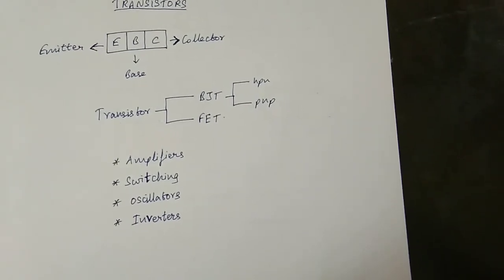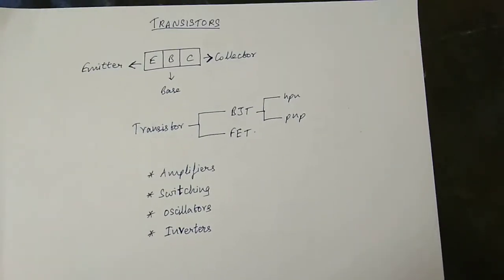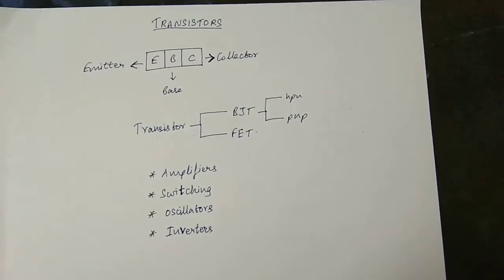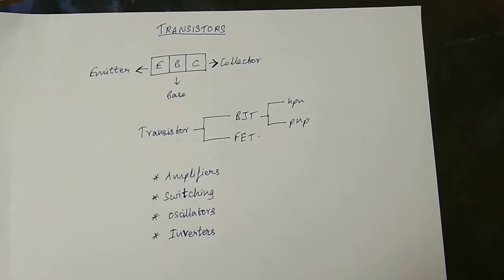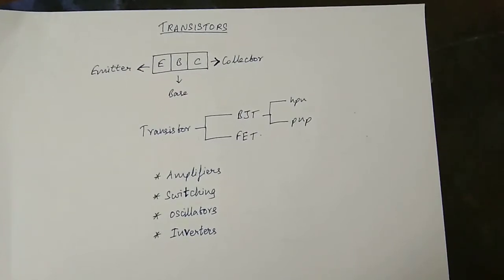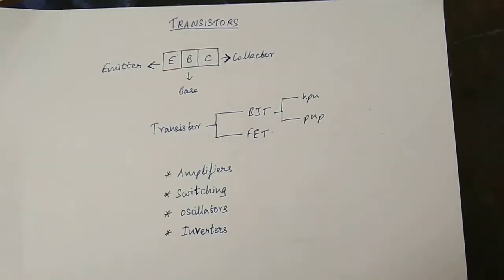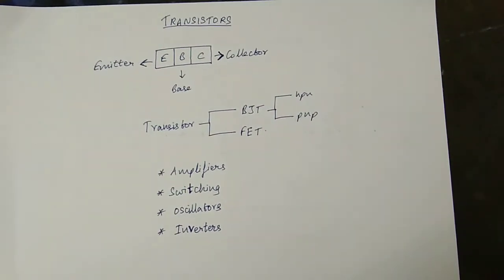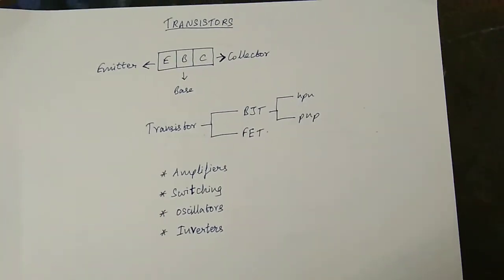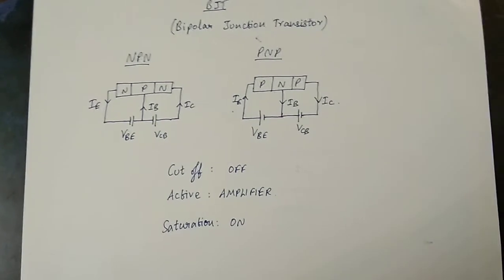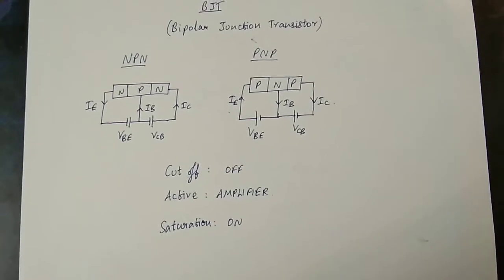BJT has two subtypes: NPN and PNP. The Bipolar Junction Transistor is a current controlled device. A small amount of current applied at the base will switch the transistor on.